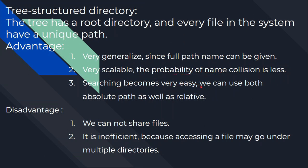Searching becomes very easy because there are both relative and absolute paths. The absolute path starts from the root. The relative path starts from a subdirectory — for example, from the second level to the next file, or from the third level to the file name. So that is called a relative path, and absolute means from the root all the way to the file name.